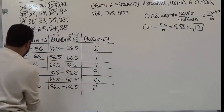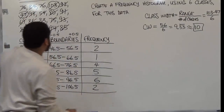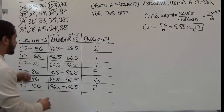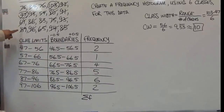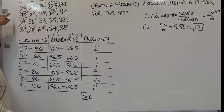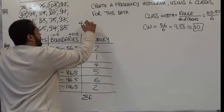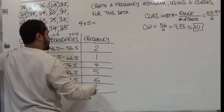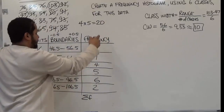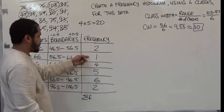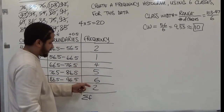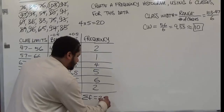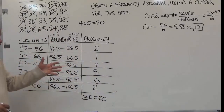To make sure we have all our values, we check the sum of the frequencies to confirm it equals our twenty data values. The data has four rows and five columns: four by five is twenty. Two plus one is three, plus four is seven, plus five is twelve, plus six is eighteen, plus two is exactly twenty. We know everything is accurate.